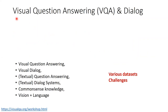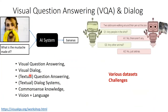Another ignored topic is visual question answering and dialogue. We know that we have chat systems that help a lot, but what about video-based question answering — like 'what is the mustache made of?' and the AI system answers 'it's a banana.' Or from the video, a chatting system discusses what is in the scene. These kinds of works are related to vision and language as well.